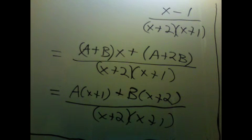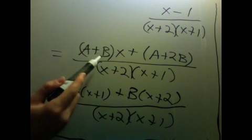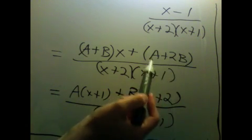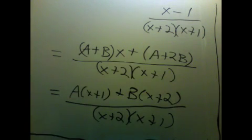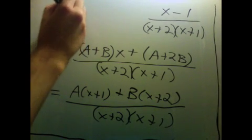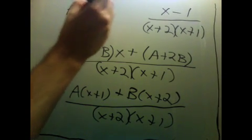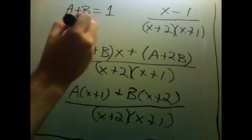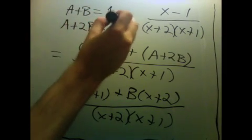And so in order for this to be true, what we need is that the coefficient of x here is the same as the coefficient of x here, and the constant term is the same as the constant term there. So that just means a plus b equals 1, and a plus 2b is negative 1.